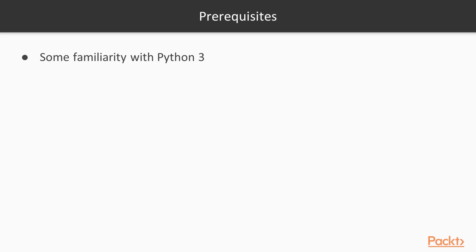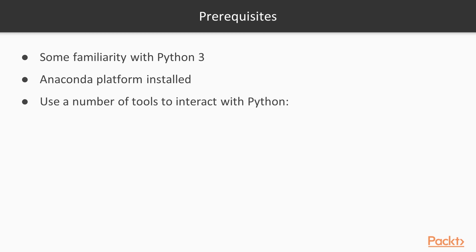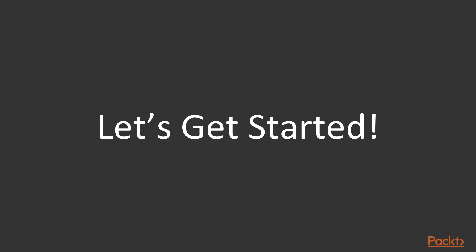There is going to be some expected familiarity with Python, and we're going to be using Python 3. I'm expecting that you have installed the Anaconda platform — it's not absolutely necessary, but your screens will look a lot like mine if you have Anaconda installed. I'm going to use a number of tools to interact with Python: the command line, the Jupyter Notebook, Spyder, and Visual Studio Code. So let's get started with the Modern Python Challenge.